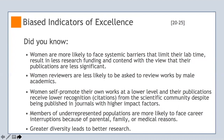This bias has extended to the peer review process, where female first authors request female reviewers 21% of the time, while men request women just 15% of the time. In addition, men cite their own papers at a 35% higher rate than women. On aggregate, women self-promote their own work at a lower level, and their publications receive lower recognition from the scientific community, despite being published in journals with higher impact factors.